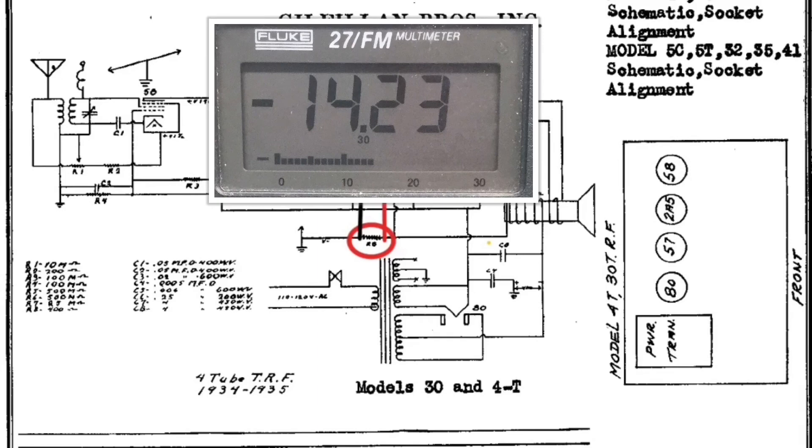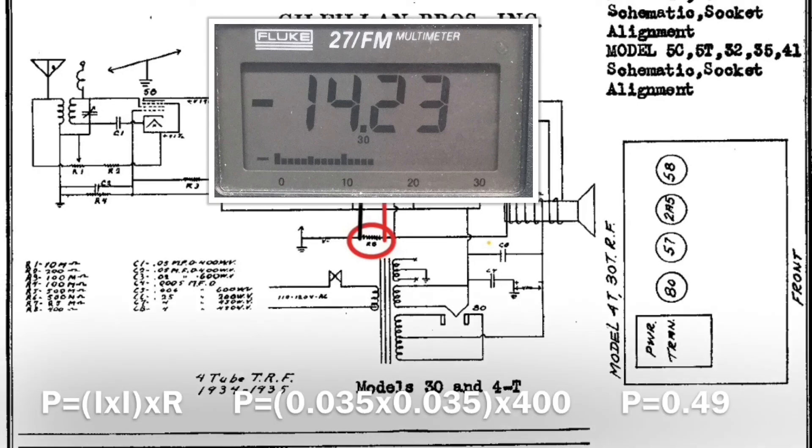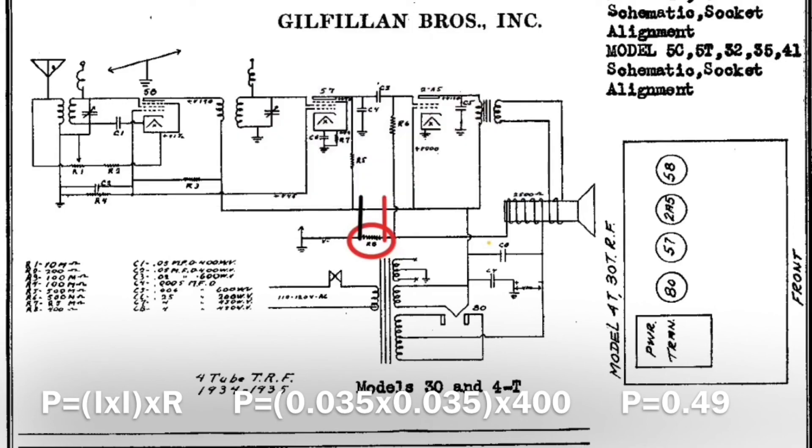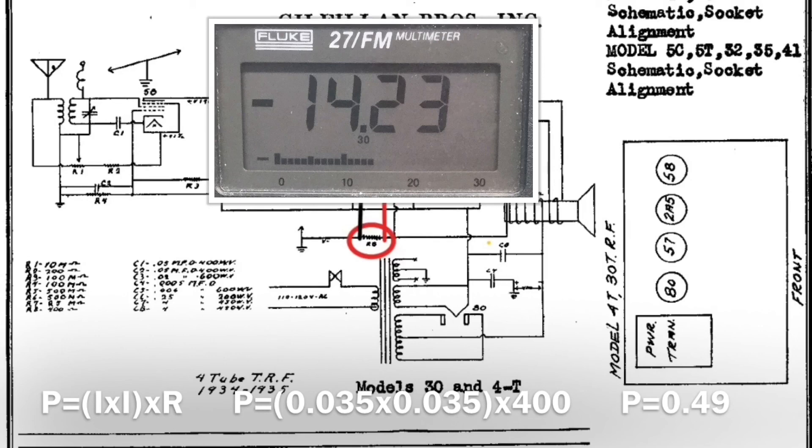And there's a third calculation for power if you would elect to take a different route. You can take the current, and you can square that number. So we could take that 0.035 times itself, and multiply that by the resistor value of 400, and that will also give you the power or wattage of 0.49.